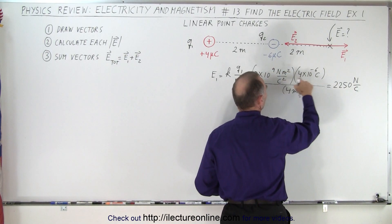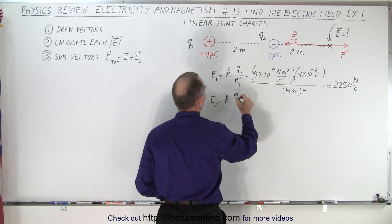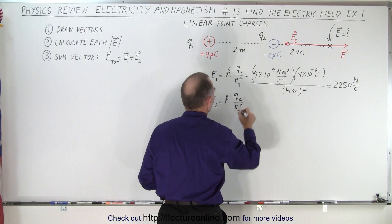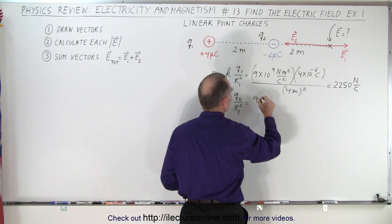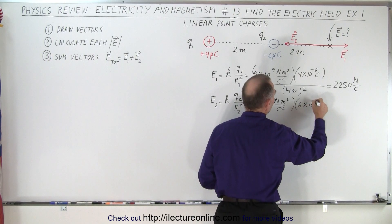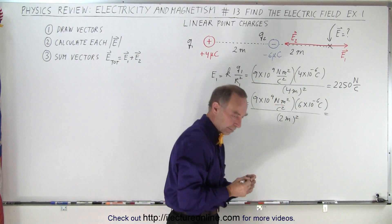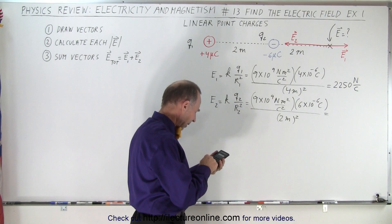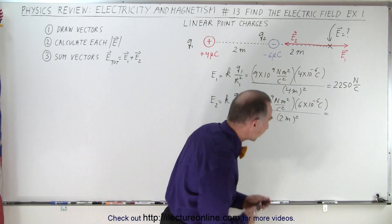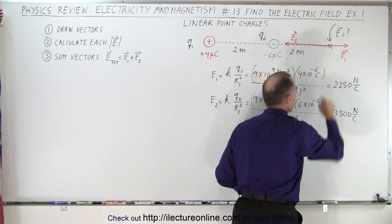...2250 newtons per coulomb. Notice how the meters squared cancel and one of the coulombs squared cancels, leaving newtons per coulomb. Now we calculate the strength of the electric field for the second charge: K times Q2. Since we're just looking for the magnitude, we don't care about the sign — we take the magnitude of the charge divided by the distance squared. That's 9 times 10 to the ninth times 6 times 10 to the minus 6 coulombs, divided by 2 meters squared. We get 13,500 newtons per coulomb — much bigger, just as predicted.